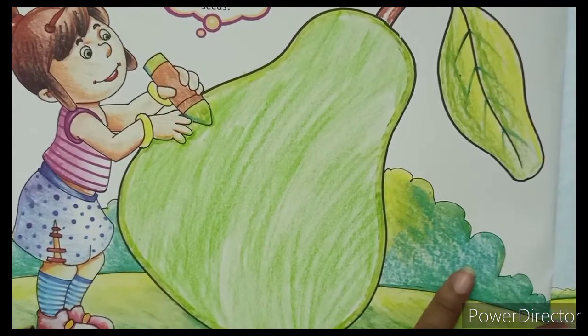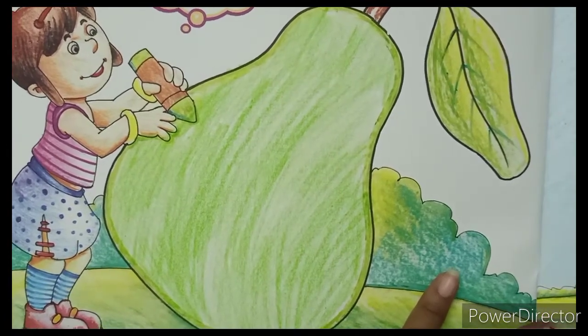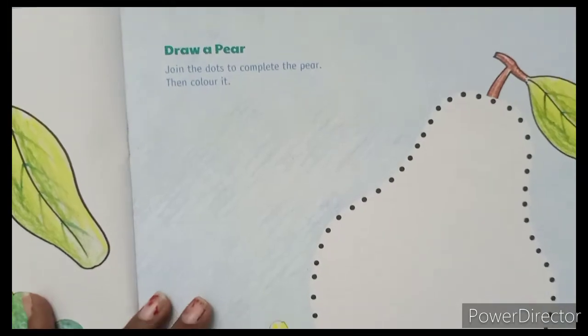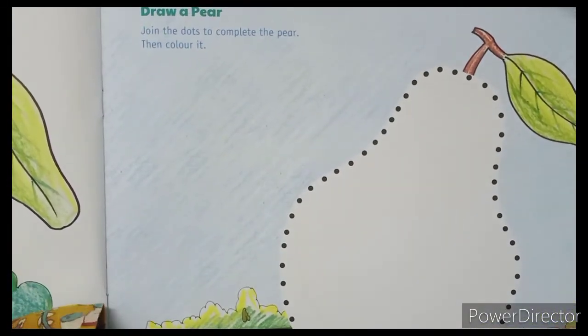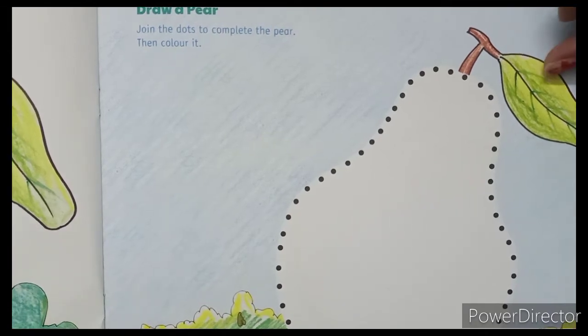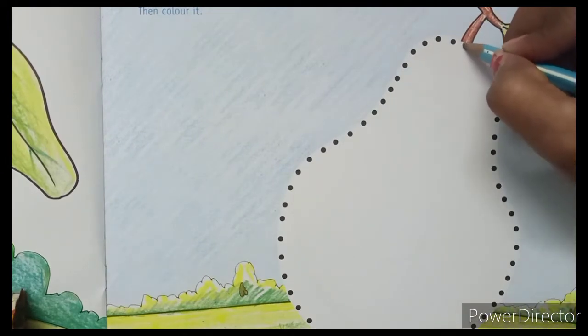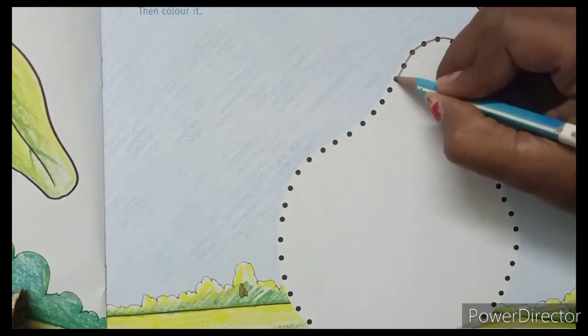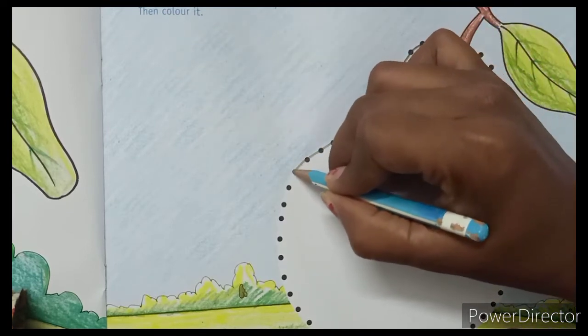Now we'll move to the next page. You can see 'Draw a Pear - Join the dots to complete the pear, then color it.' What we are going to do here is join those dots. Let's join the dots with pencil so that when we join the dots, the pear is going to be complete, the picture is going to look completed, and then you are going to color it.